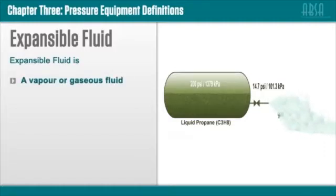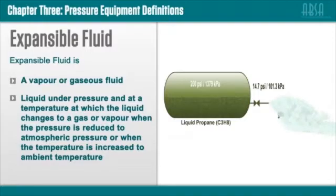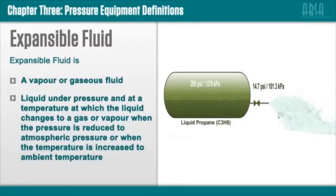a vapor or gaseous fluid, or a liquid under pressure and at a temperature at which the liquid changes to a gas or vapor when the pressure is reduced to atmospheric pressure or when the temperature is increased to ambient temperature. This means that a liquid such as room temperature propane is expansible because it will flash into a vapor if the pressure is reduced to atmospheric pressure.